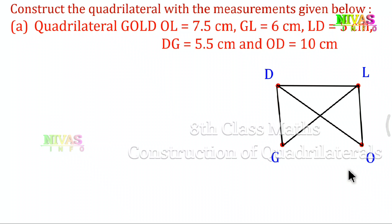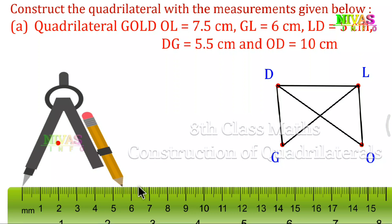First, we made a side draw using scale and compass. I will show you step by step. We chose DZ, which is 5.5 cm. I will set the compass length to 5.5 cm and draw an arc.